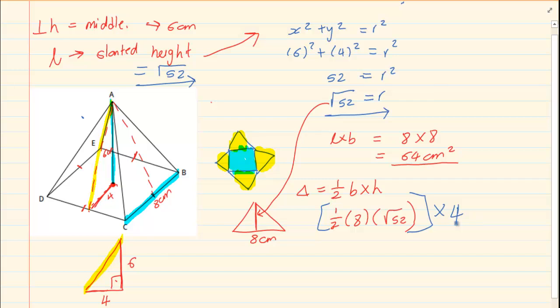So we are going to now times this answer by 4. So we have half times 8 times the root of 52. And then we are going to say times 4, which equals to 32 root of 13 or you can say 115.4.